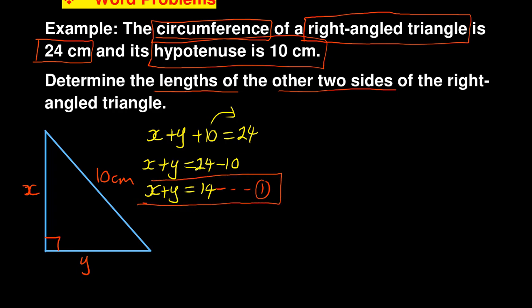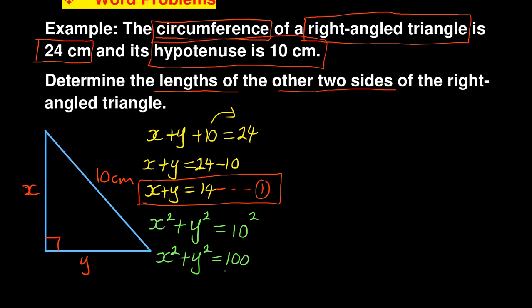My first equation is done. For the second part: it's a right angle triangle, so remember the theorem of Pythagoras. The theorem says the sum of the squares of the two sides equals the square of the hypotenuse. So x squared plus y squared equals 10 squared, which is 100. This is my equation two.